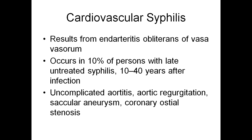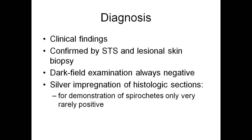Cardiovascular syphilis results from endarteritis obliterans of the vasa vasorum, occurring in 10% of persons with late untreated syphilis — 10 to 40 years after the infection. Uncomplicated aortitis, aortic regurgitation, saccular aneurysm, and coronary ostial stenosis may be seen.